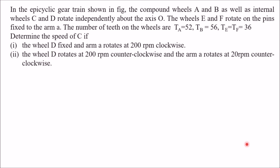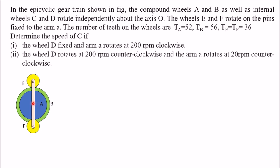The next problem: in the epicyclic gear train shown in the figure, compound wheels A and B as well as internal wheels C and D rotate independently about axis O. Speed of A and B are the same because they are compound wheels. There are also two wheels E and F that rotate on pins fixed to arm A.